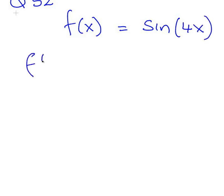So, let's have a look at question 52. f(x) is sin(4x). The derivative of that, therefore, equals 4 times the derivative of the rest of it there, and that is cos(4x).